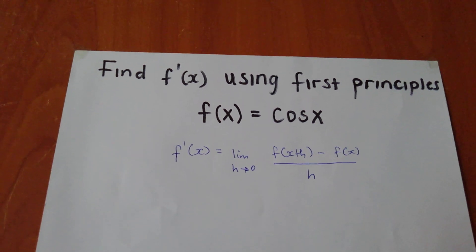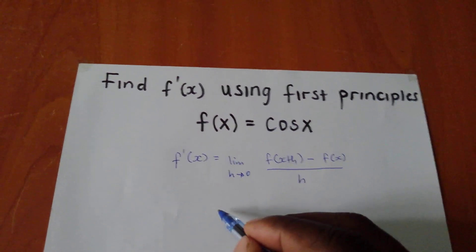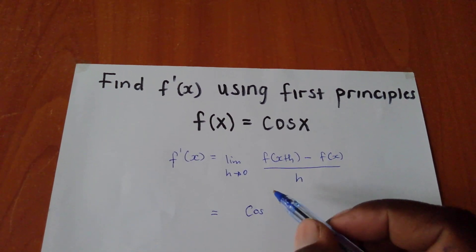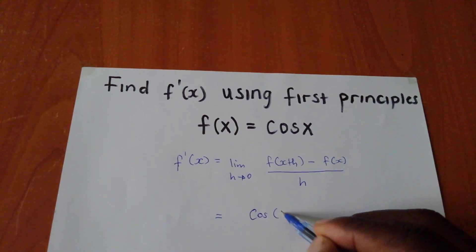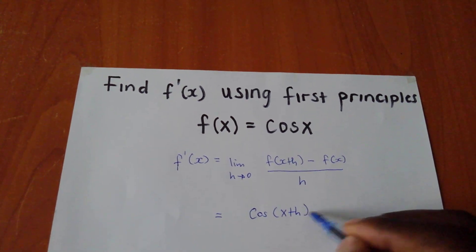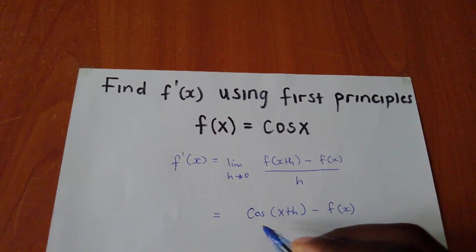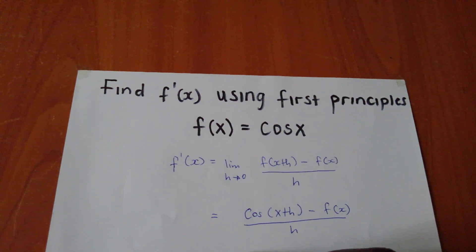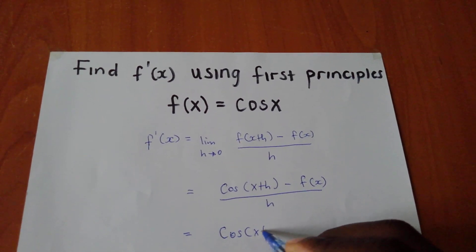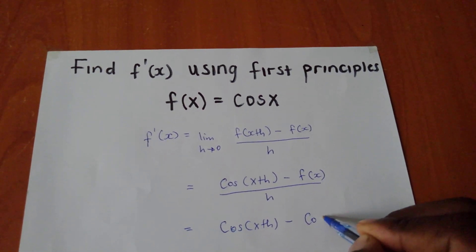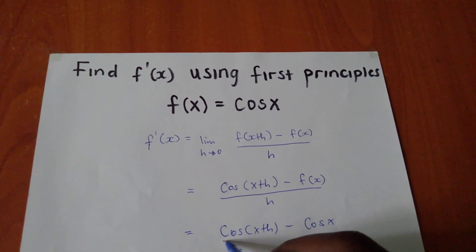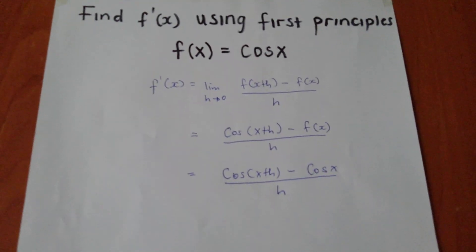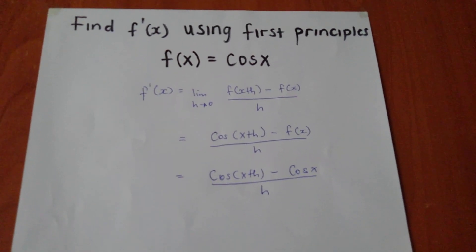We are using f(x) = cos x. Whenever you see x, you attach h — that's what x plus h means. So we get the limit as h tends to 0 of cos(x plus h) minus cos(x), all over h.